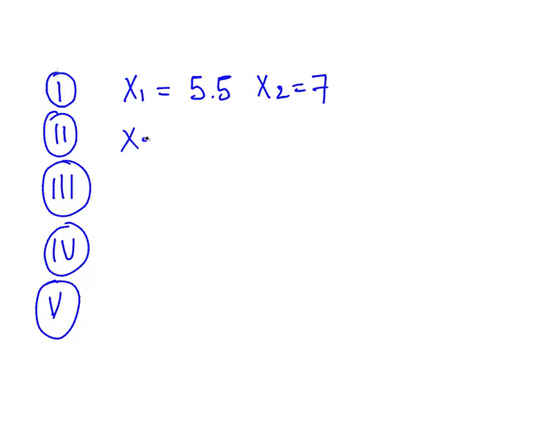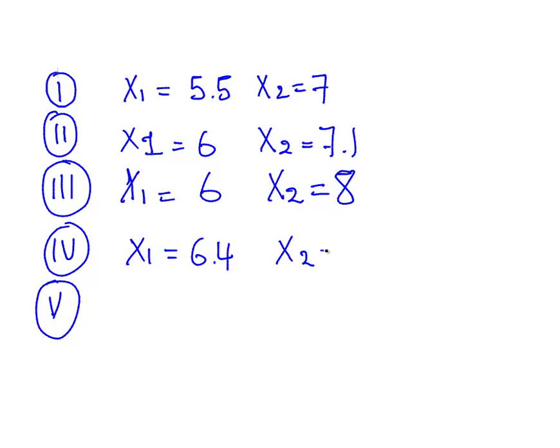You might be given: one, x1 equals 5.5, x2 equals 7. Two, x1 equals 6, x2 equals 7.1. Three, x1 equals 6, x2 equals 8. Four, x1 is 6.4, and x2 is 7.9. Five, x1 equals 5, and x2 equals 10. So these might be all the various solutions that you're going to get.